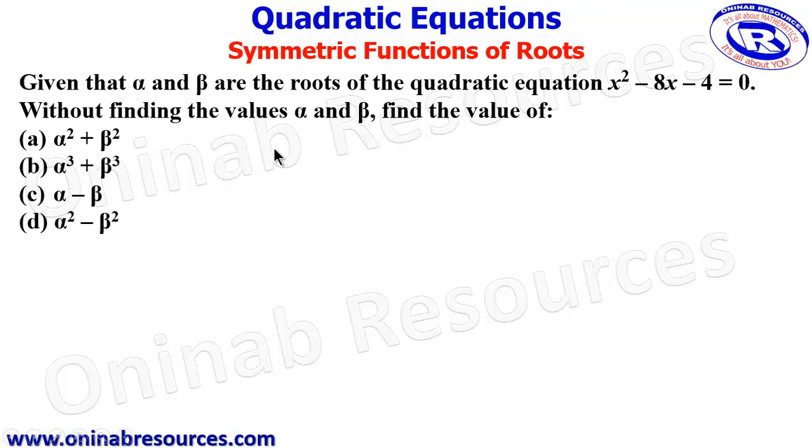We'll start with our problem. Given that alpha and beta are the roots of the quadratic equation x squared minus 8x minus 4 equals 0, without finding the values of alpha and beta, find the value of: (a) alpha squared plus beta squared, (b) alpha cubed plus beta cubed, (c) alpha minus beta, and (d) alpha squared minus beta squared.